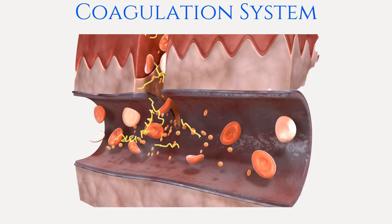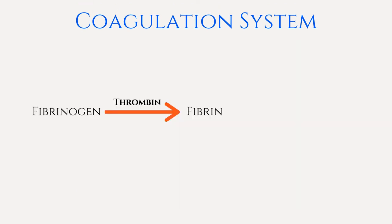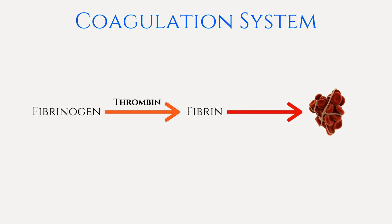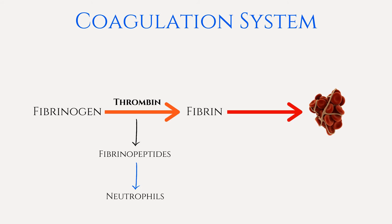The coagulation enzyme cascade is similar to the kinin system in that they are both triggered by blood vessel injury. The activation of this system leads to the formation of a fibrin clot. The main inflammatory mediator is thrombin, which plays a role in converting fibrinogen to fibrin, which then accumulates to form a blood clot. The blood clot stops the bleeding, traps and prevents spread of microorganisms, and sets up for future healing and repair. During this conversion, fibrinopeptides are produced, which are chemotactic for neutrophils and also enhance the effects of bradykinin.